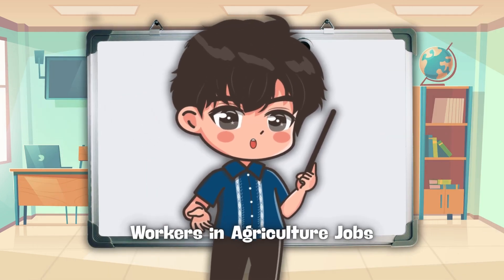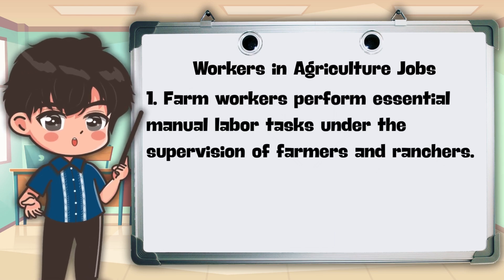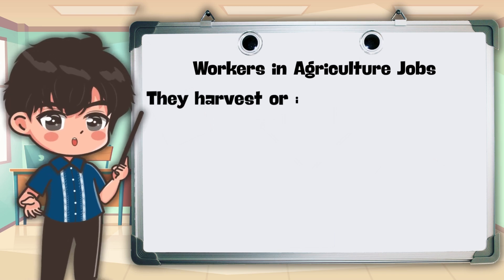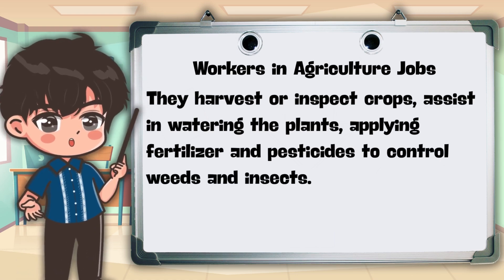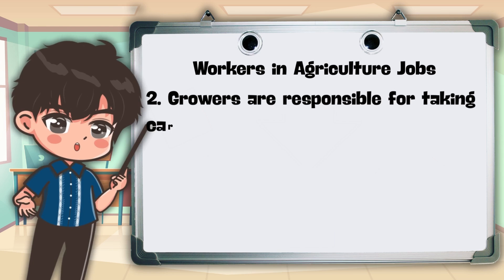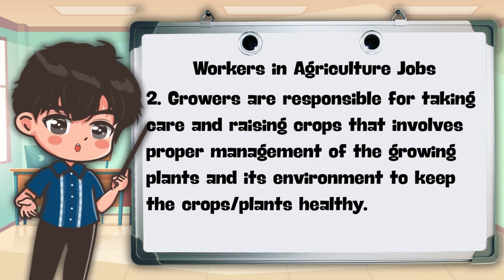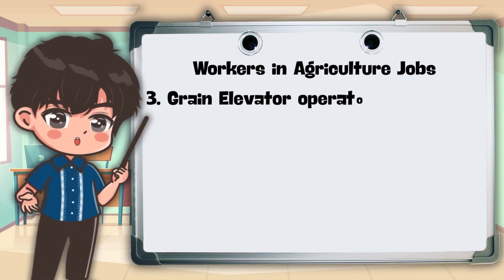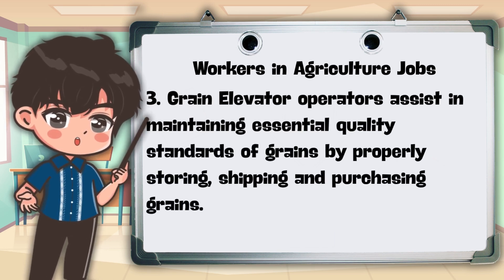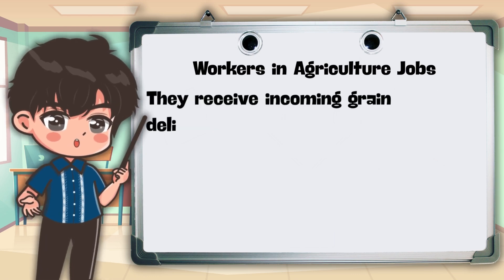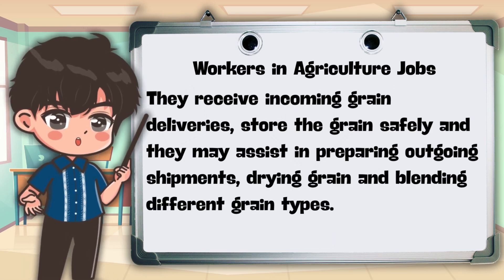Now here are the individuals involved in agricultural jobs. 1. Farm workers perform essential manual labor tasks under the supervision of farmers and ranchers. They harvest or inspect crops, assist in watering the plants, applying fertilizer and pesticides to control weeds and insects. 2. Growers are responsible for taking care and raising crops that involves proper management of the growing plants and its environment to keep the crops and plants healthy. 3. Grain elevator operators assist in maintaining essential quality standards of grains by properly storing, shipping, and purchasing grains. They receive incoming grain deliveries, store the grain safely, and may assist in preparing outgoing shipments, drying grain, and blending different grain types.